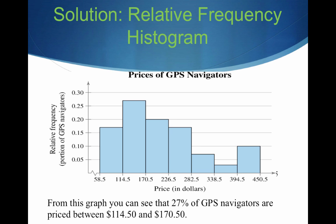Finally, the relative frequency histogram is the same as the frequency histogram, except the y-axis shows relative frequencies — decimals or percentages — instead of raw counts. To summarize: if I ask for a frequency histogram, your y-axis is the count within each class. If I ask for a relative frequency histogram, your y-axis is the decimals or percentages. For example, from the graph we can see that 27% of the GPS navigators are priced between $114.50 and $170.50.